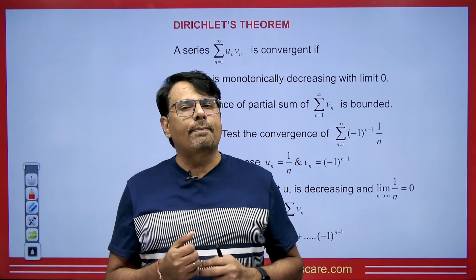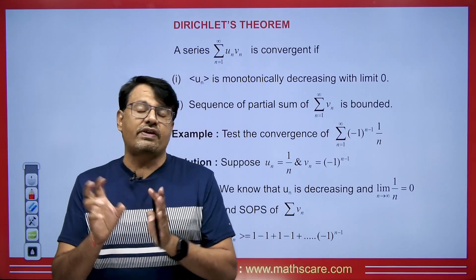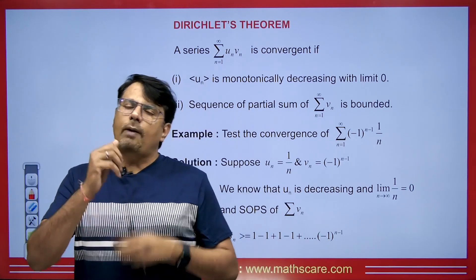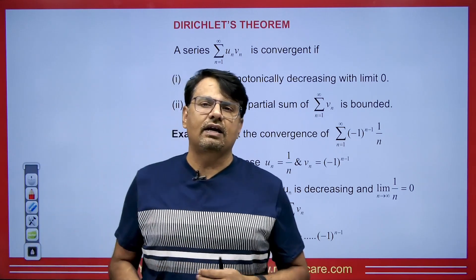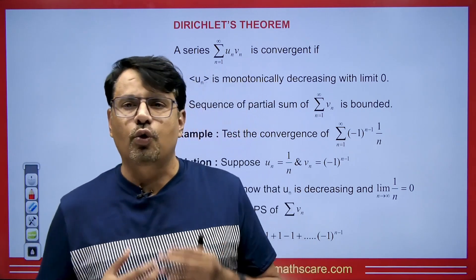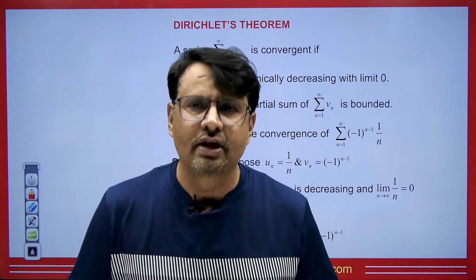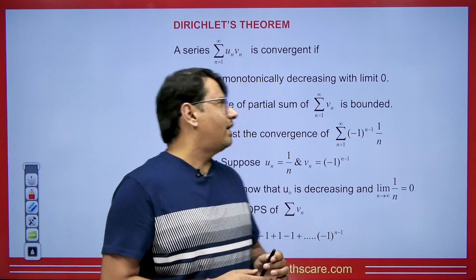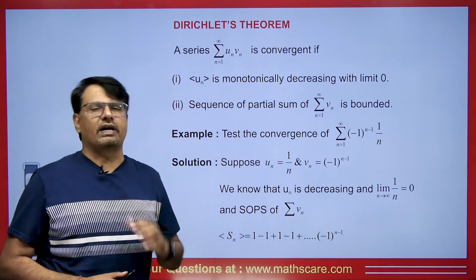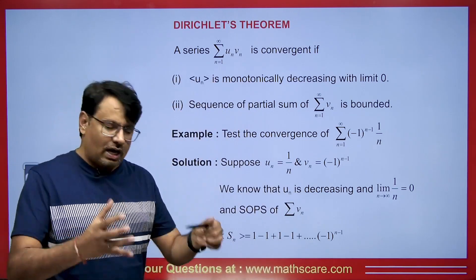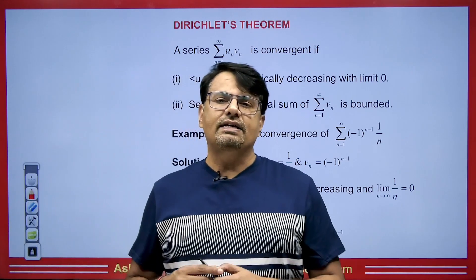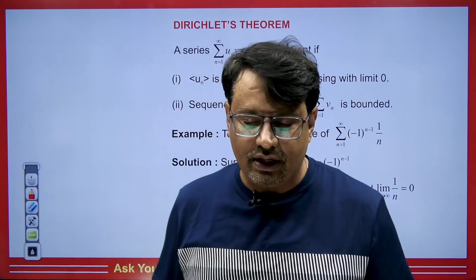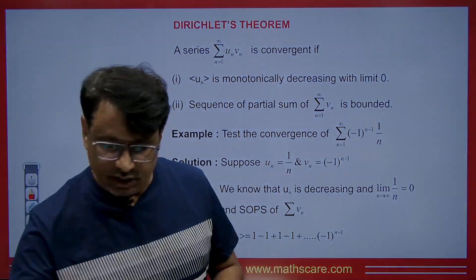We will see how to apply these theorems to a particular series when we are given a series of products of two sequences. You are supposed to find out whether this series will be convergent or not. To solve this question, we have the concepts of Abel and Dirichlet — meaning the concepts proposed by their theorems are used. We will see what those are and how to figure out whether a series is convergent or not.